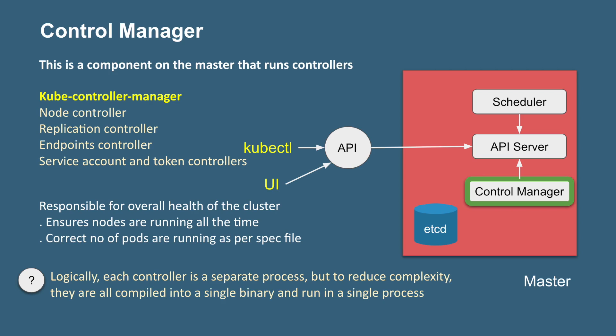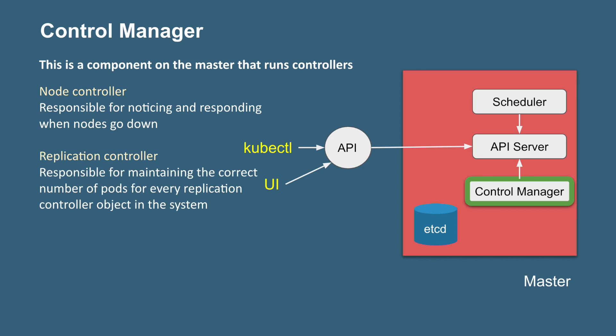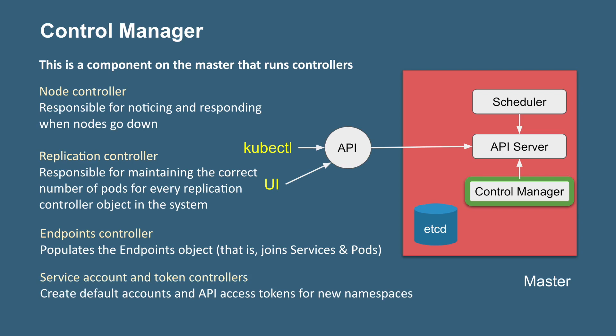An important interview point: these controllers are all separate processes, but to reduce complexity they are compiled into a single binary and run as a single process. The node controller is responsible for monitoring nodes and sending a signal when a node goes down. The replication controller checks that the correct number of pods as per configuration files are maintained. The endpoints controller is responsible for maintaining all services and communications. The service account and token controllers are responsible for maintaining accounts, API access, and namespaces.